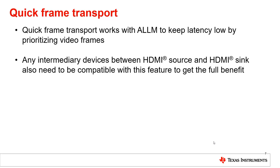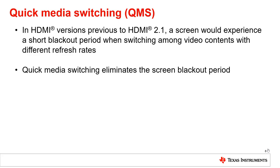Be sure that any intermediary devices between the HDMI source and HDMI sync are also compatible with this feature. In HDMI versions previous to HDMI 2.1, a screen would experience a short blackout period when switching between video contents with different refresh rates. Quick Media Switching eliminates the screen blackout period caused by the difference in refresh rate.